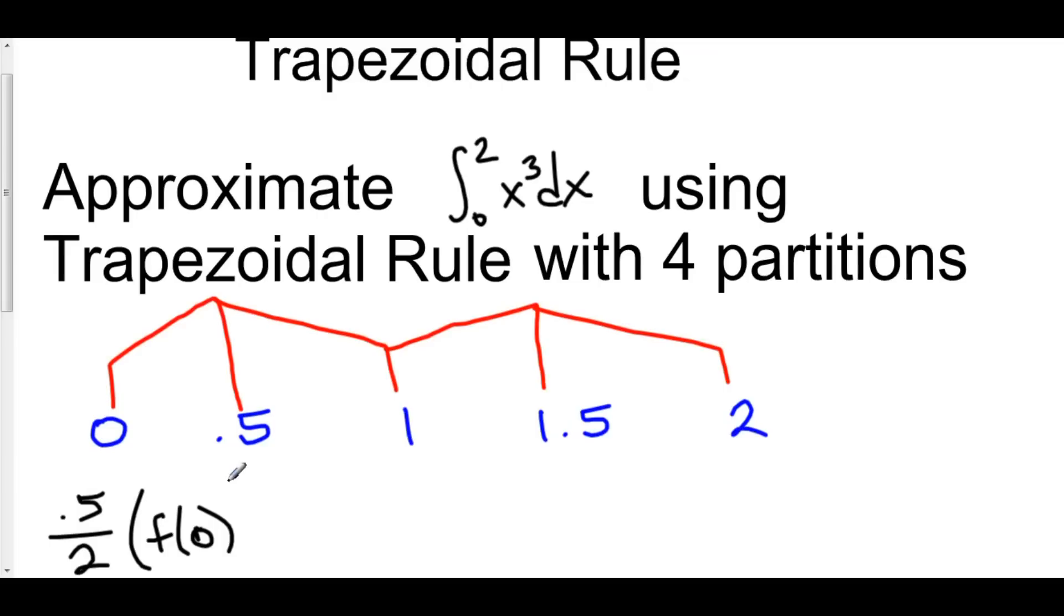Plus, 2 times f of 0.5, and it's 2 times because 0.5 is the right hand side of my first trapezoid, as well as the left hand side of my second trapezoid. Plus,